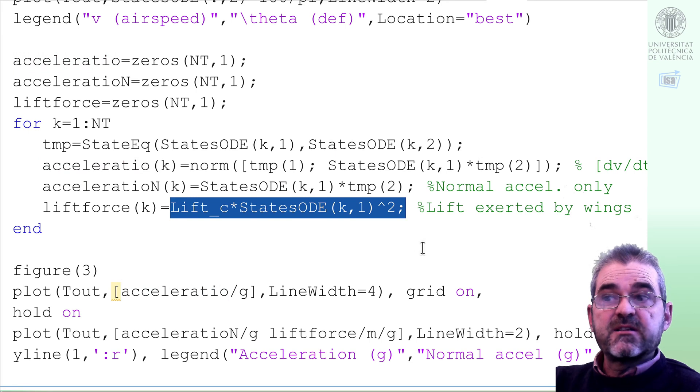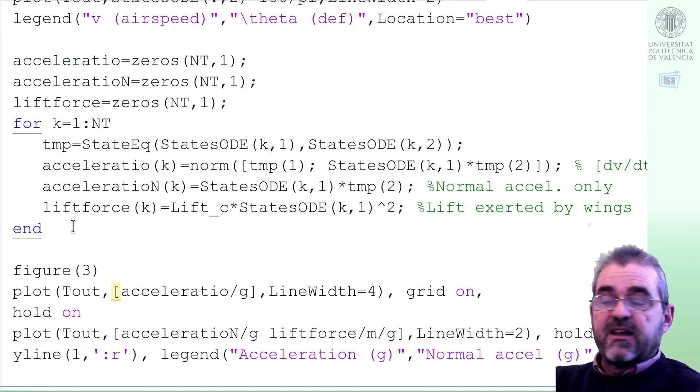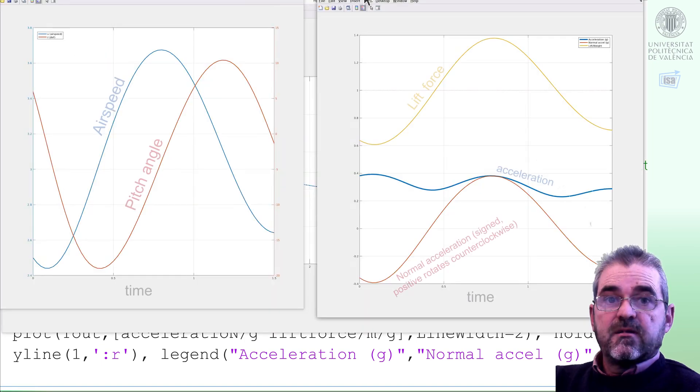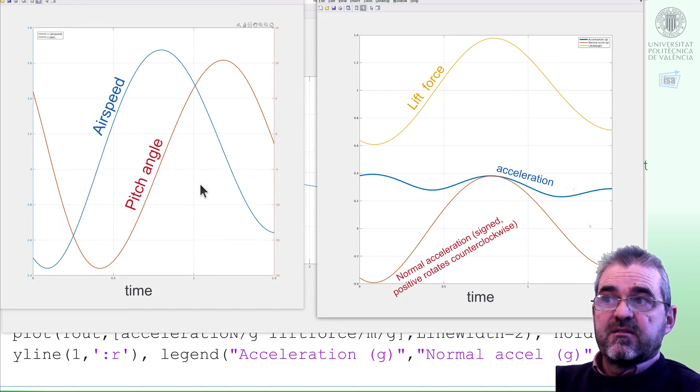Also, the lift provided by the wings is just the airspeed, first simulated state, squared, times the lift coefficient. So, with this, I can plot those accelerations, and we end up having plots like this. In the left one, we have in blue the airspeed, in red the pitch angle, and in the right-hand side we have in blue the total acceleration, in red the normal acceleration, depending on the sign, it will mean that the path rotates in clockwise or counterclockwise direction.